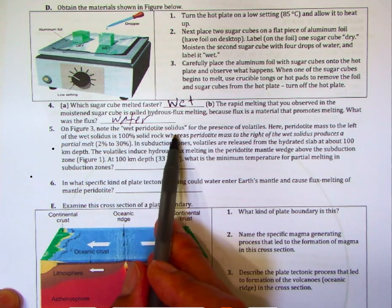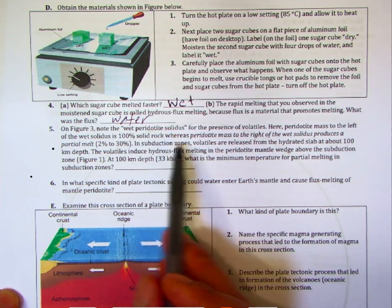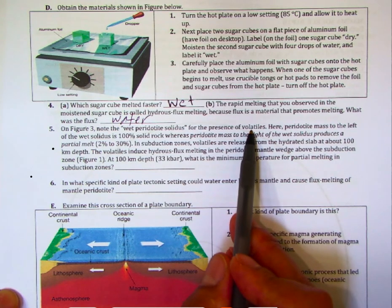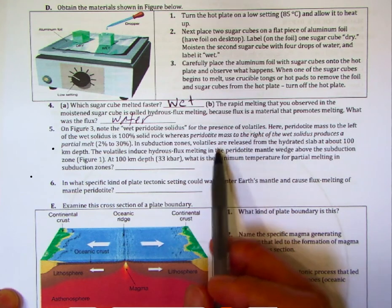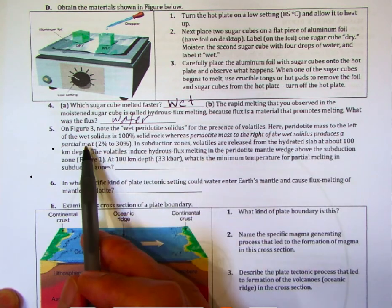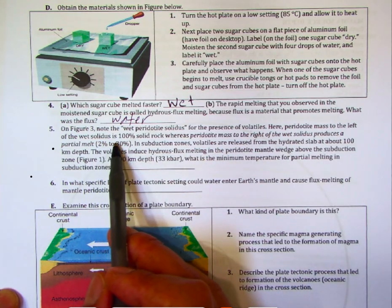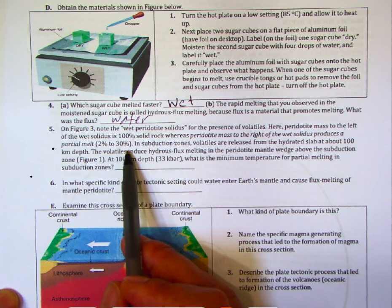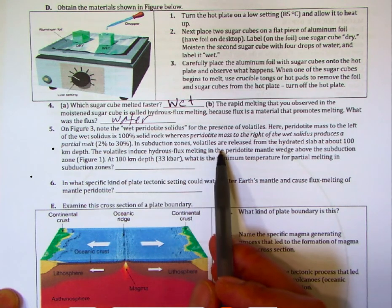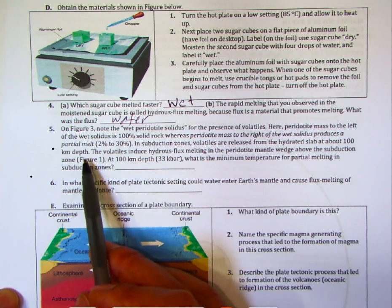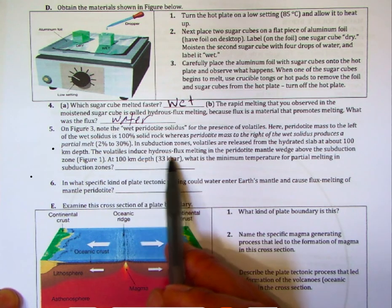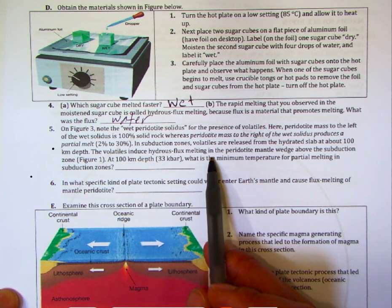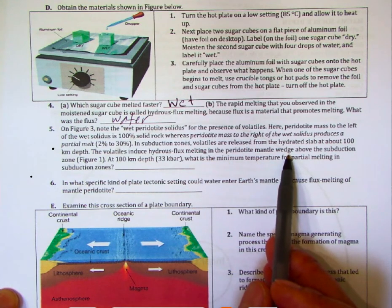Now we're going to look at the wet peridotite solidus, which represents volatiles — mostly water and carbon dioxide. To the left of the wet solidus, the peridotite is 100% solid, and anything to the right represents partial melting. This happens in subduction zones as water is released by the hydrated slab at 100 kilometers depth, and the volatiles induce hydrous flux melting in the peridotite mantle wedge above.